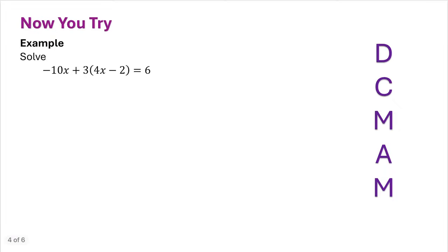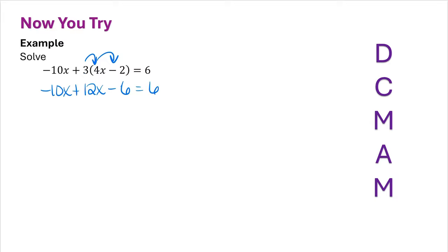Now pause the video and try this example on your own. Here we have negative 10x plus 3 times (4x minus 2), so I'm going to start by distributing. That gives me negative 10x plus 12x minus 6 equals 6. Combining like terms means putting together negative 10x and 12x, giving me 2x minus 6 equals 6.